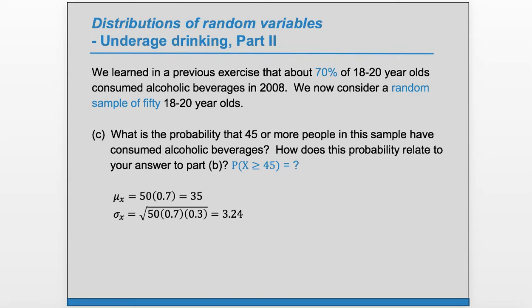So we'd be applying the binomial formula 6 times and adding up those probabilities. We could definitely do that, but let's see if normal approximation will be appropriate in this case, because in general, that's a lot faster to do it that way.